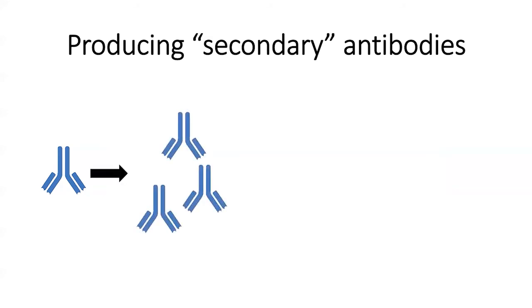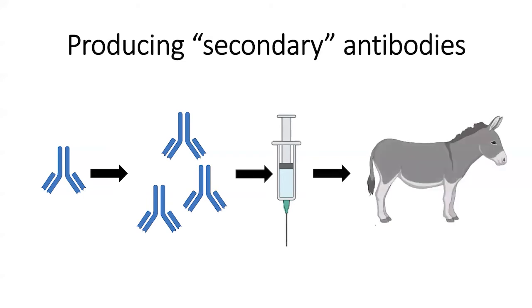We get a bunch of them, purify them so it's just the goat antibodies. We then put them into an inoculation, and we inject that into a different animal, something like a donkey, perhaps. And even though you might think, well, goats and donkeys seem like they're pretty similar, it turns out that the donkey's immune system will see these goat antibodies and say, those are not mine. Those don't belong here. So they will produce antibodies against the goat antibodies.